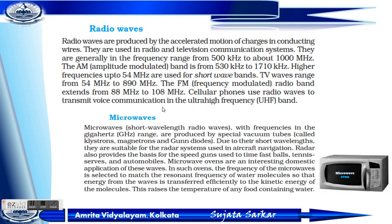Microwaves have frequencies in the gigahertz range and are produced by special vacuum tubes, including the magnetron and the Gunn diode. Due to their short wavelength, they are suitable for radar systems used in aircraft navigation. Radar also provides the basis for speed guns used to time fast balls.